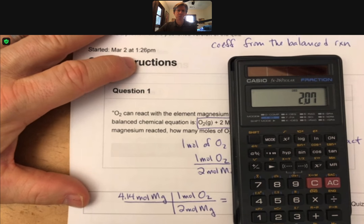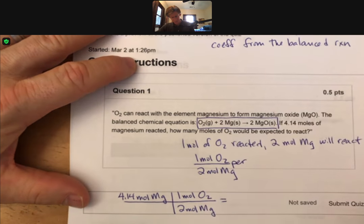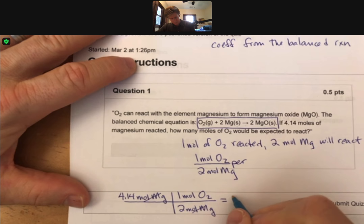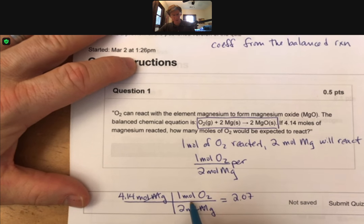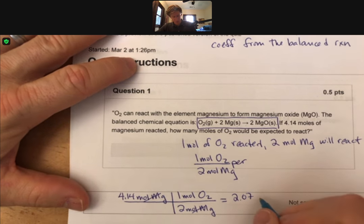We get 2.07 as the number and as our final units, moles of O2, moles of oxygen.